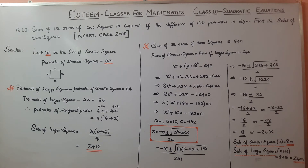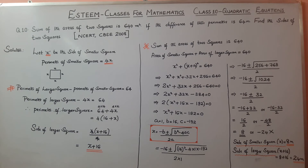The sum of the areas of two squares is 640 square meters. The area of a square is side times side. So we write: x squared plus (x plus 16) squared equals 640.